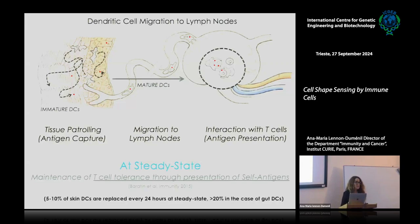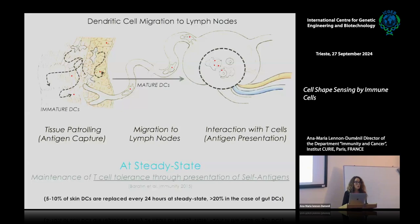There is one main paper showing that if we disrupt this steady-state or homeostatic migration of dendritic cells, mice develop autoimmune disease. In that paper, they also show that dendritic cells carry self-antigen from the tissue to the lymph nodes, leading to T cell tolerance — they present antigen but instead of activating T cells, they inactivate them, which is very important to avoid autoimmune disease. In the mouse skin, 5 to 10% of dendritic cells are replaced every 24 hours because they migrate to the lymph node, and this is more than 20% in some tissues such as the gut.